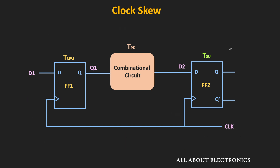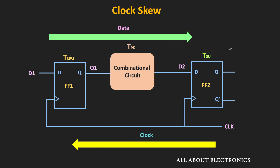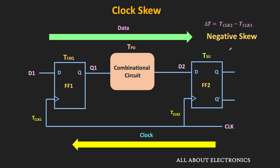Similarly, when the data and clock signals flow in opposite directions, we have negative clock skew. In this case, the second flip-flop receives the clock earlier than the first flip-flop. If Tclk2 is the time when the second flip-flop receives the clock and Tclk1 is the time when the first flip-flop receives the clock, then the difference between them will be negative.